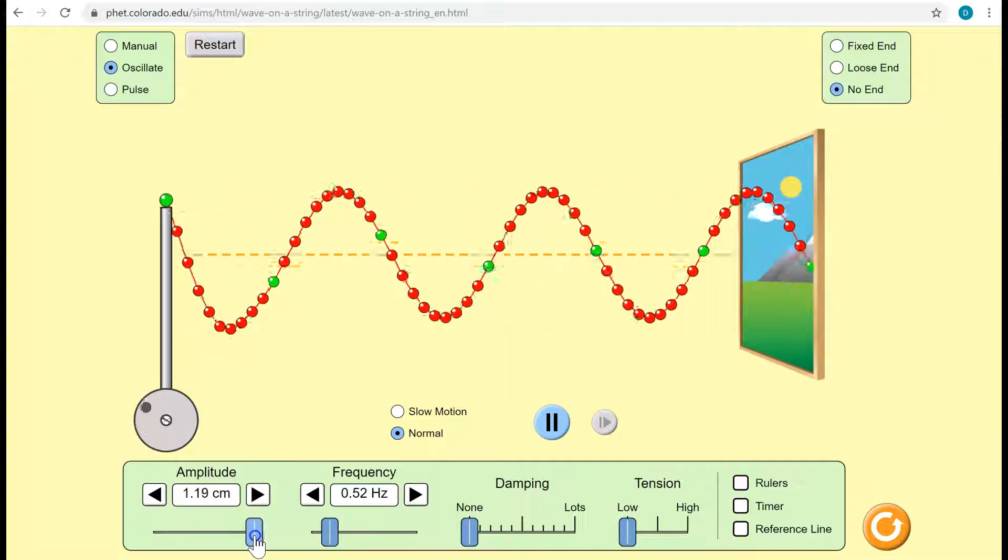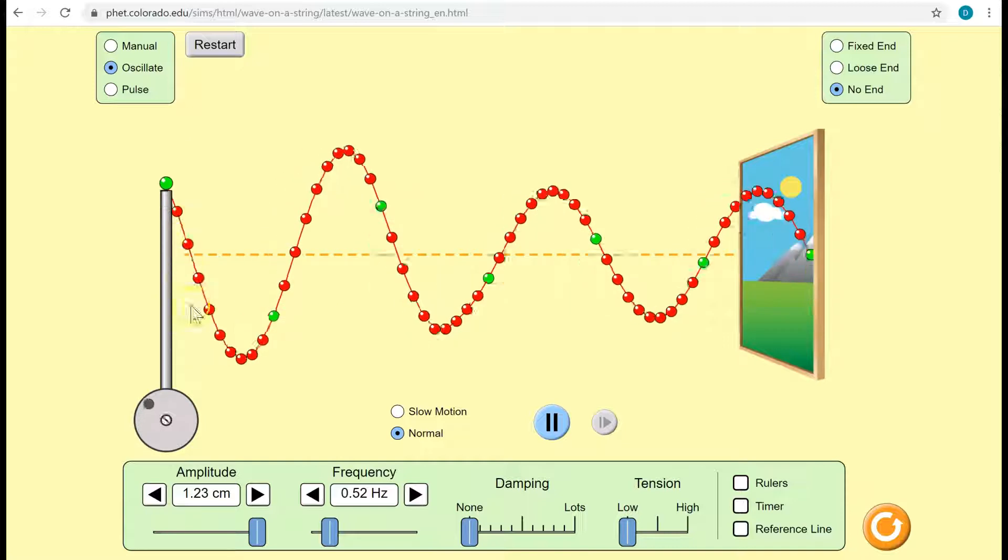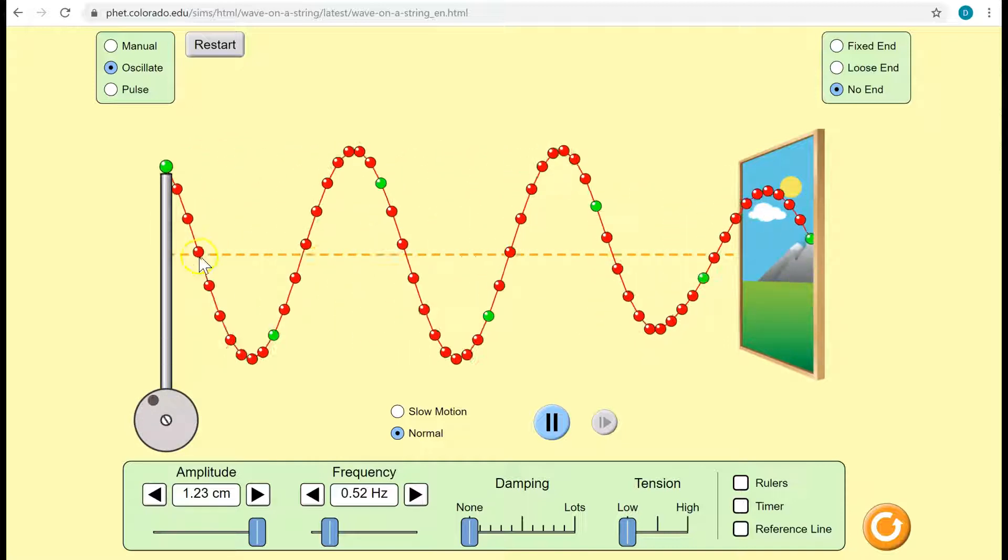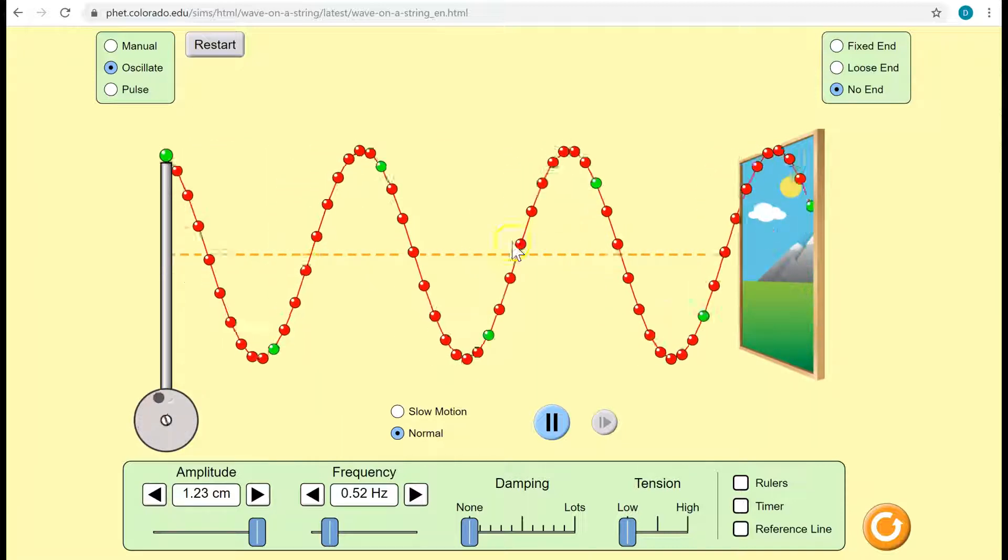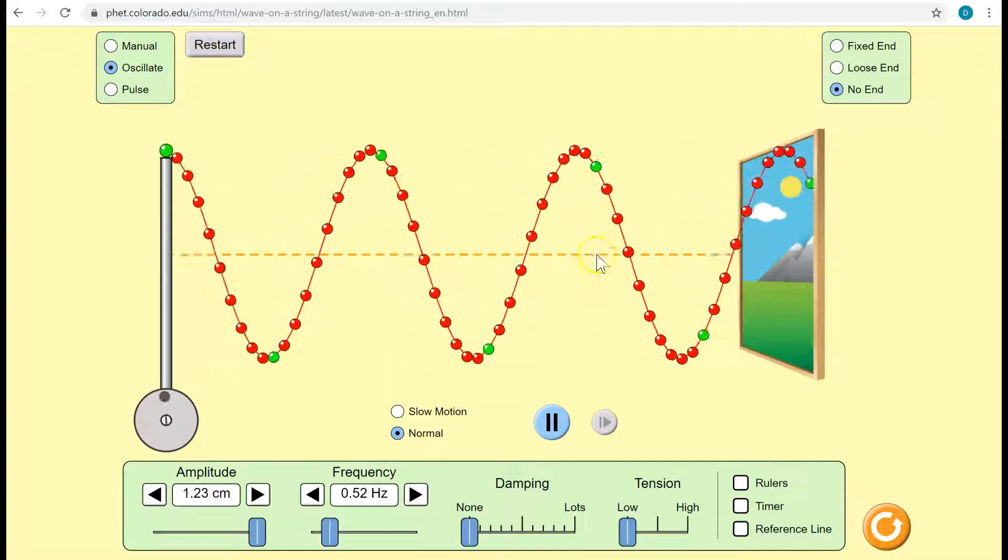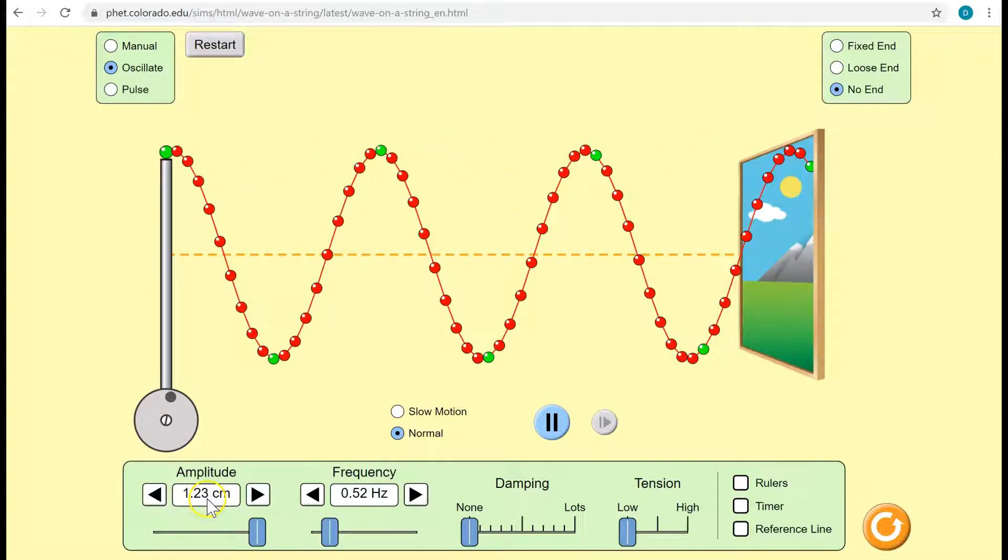If we change the amplitude, then we're changing the maximum displacement of the particles from this dashed center line from equilibrium. Amplitude is max displacement.